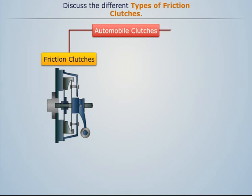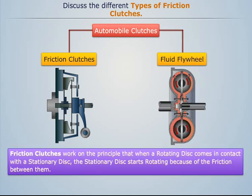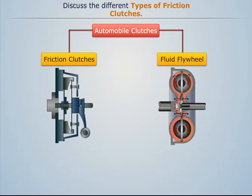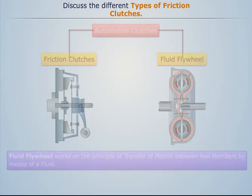Automobile clutches can be mainly classified into two types: friction clutches and fluid flywheel. Friction clutches work on the principle that when a rotating disc comes in contact with a stationary disc, the stationary disc starts rotating because of the friction between them. Fluid flywheel works on the principle of transfer of motion between two members by means of a fluid.